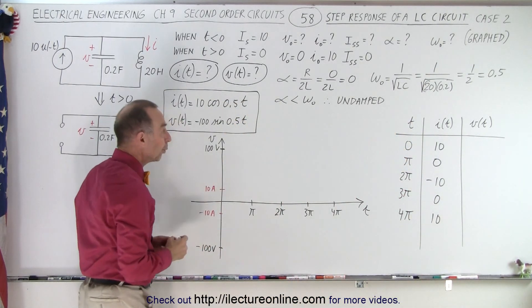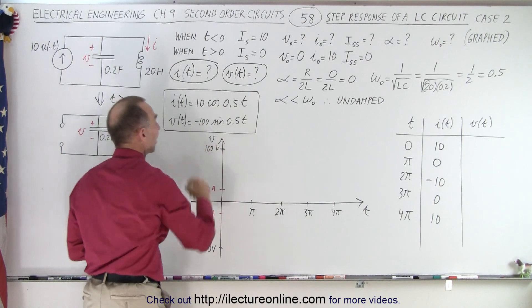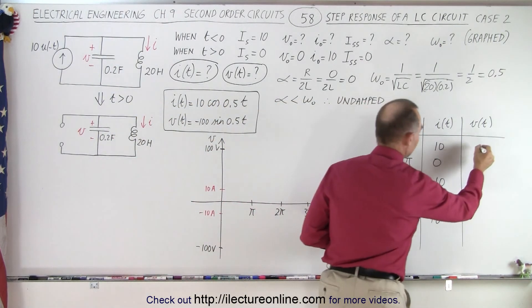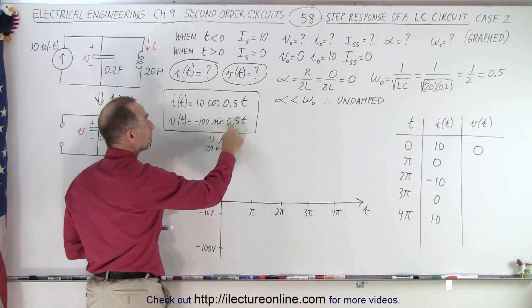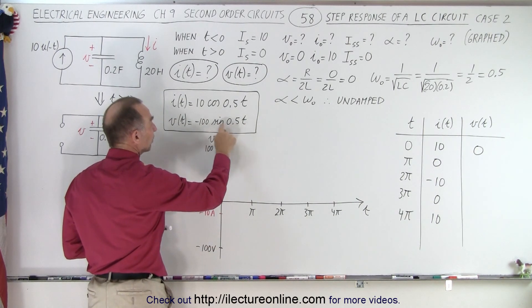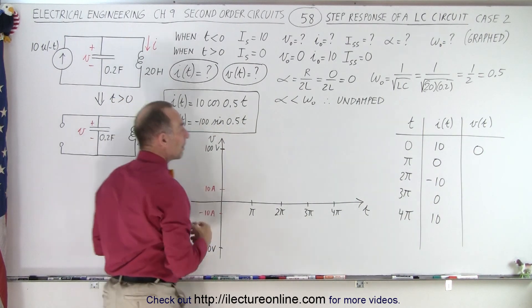Now for the voltage, when time equals 0, sine of 0 is 0, so we have 0 voltage. When time is 0.5π, that's π over 2, the sine of that is 1, so we get minus 100.